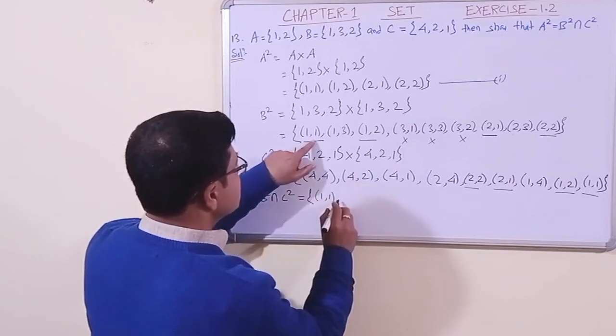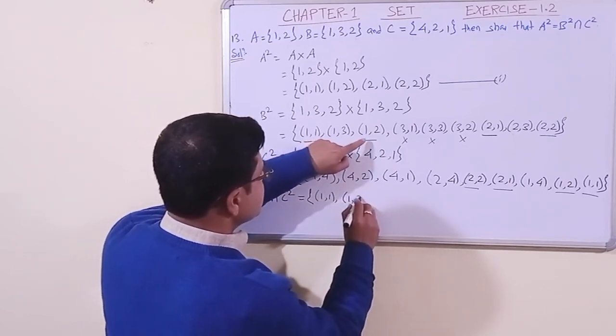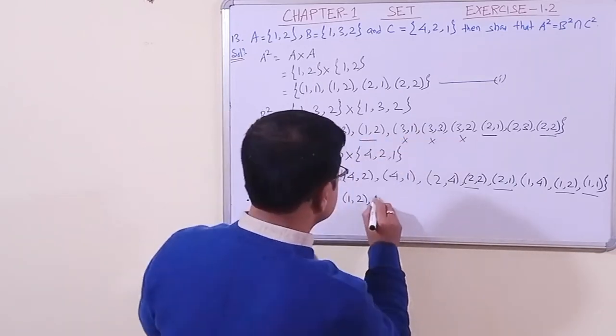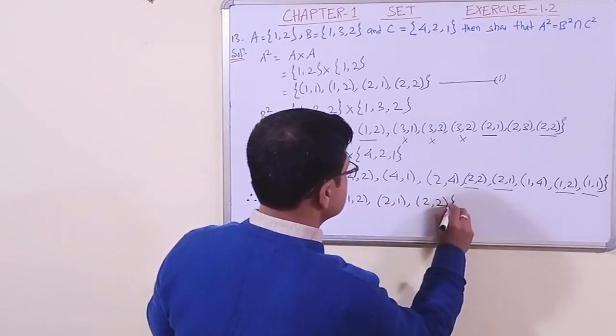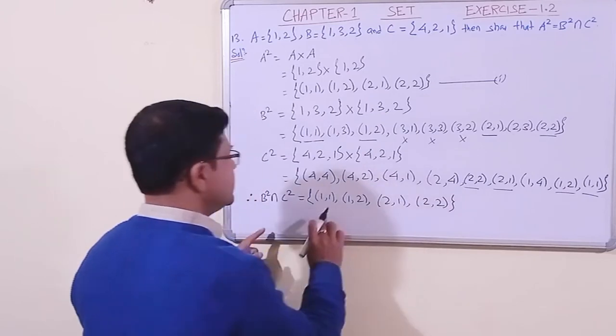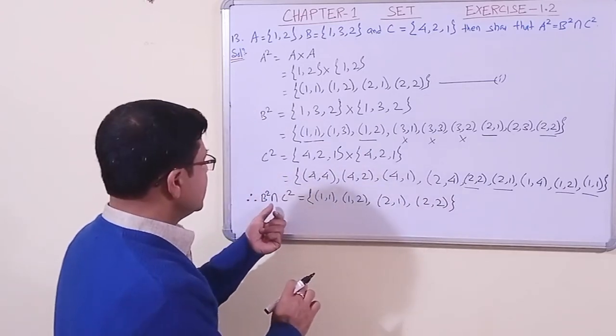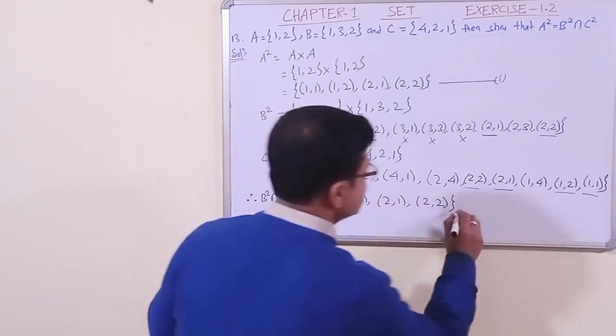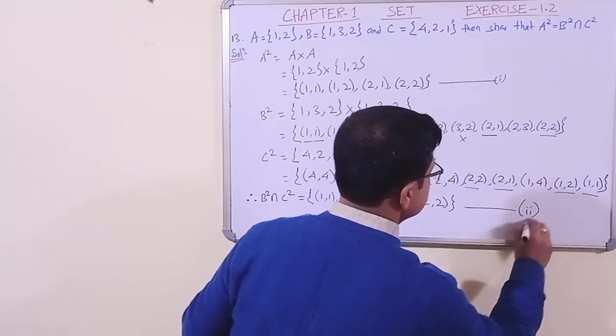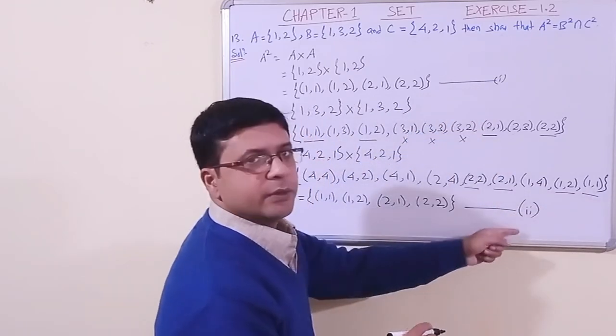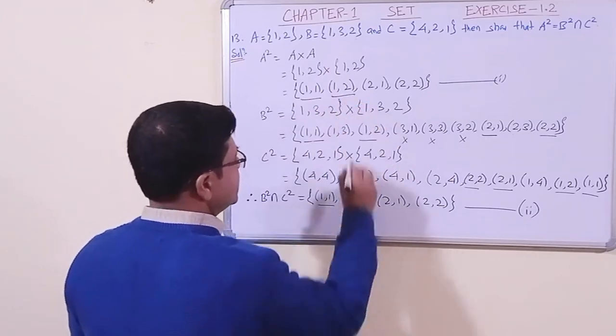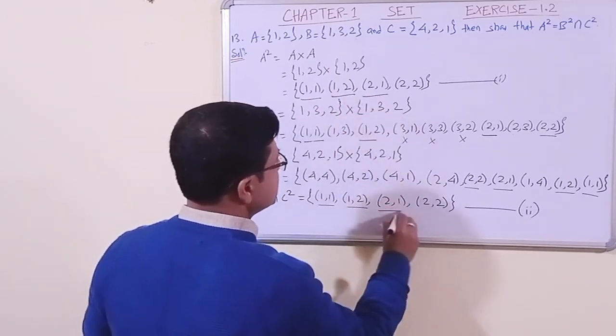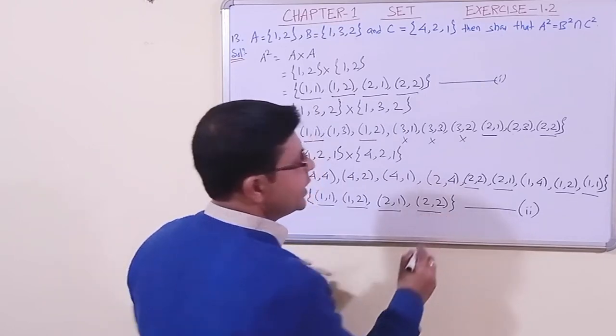Now from 1 and 2, if we compare, are they the same? (1,1), (1,2), (2,1), (2,2). We have observed that all the elements are same.